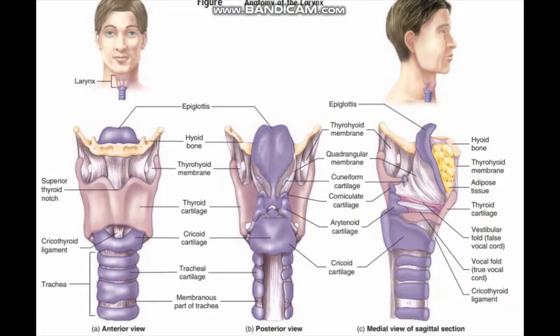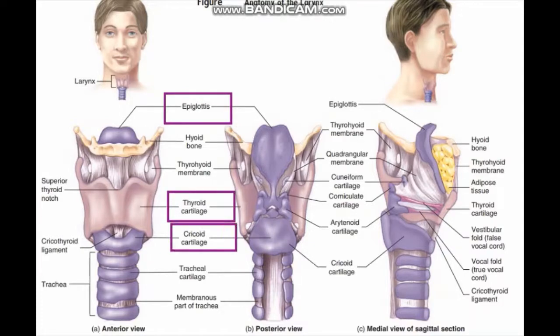Six cartilages make up the larynx. Three are unpaired and three are paired. The unpaired ones are the epiglottis, thyroid cartilage, and cricoid cartilage. The paired ones are the arytenoid cartilage, corniculate cartilage, and cuneiform cartilage.